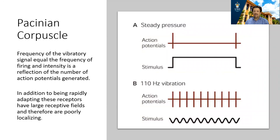This fast-adaptive property of Pacinian corpuscles means they are ideally suited to detecting vibration. When the stimulus is applied, you get a response immediately, then adaptation, no response. When the stimulus is removed, the same thing. A vibration that's constantly going on and off is ideally detected by Pacinian corpuscles, and that's exactly what this type of receptor is doing within the skin — detecting vibratory information.